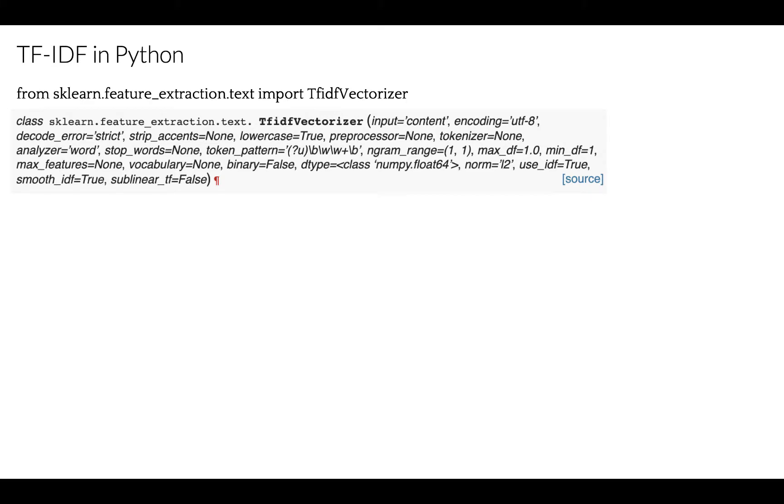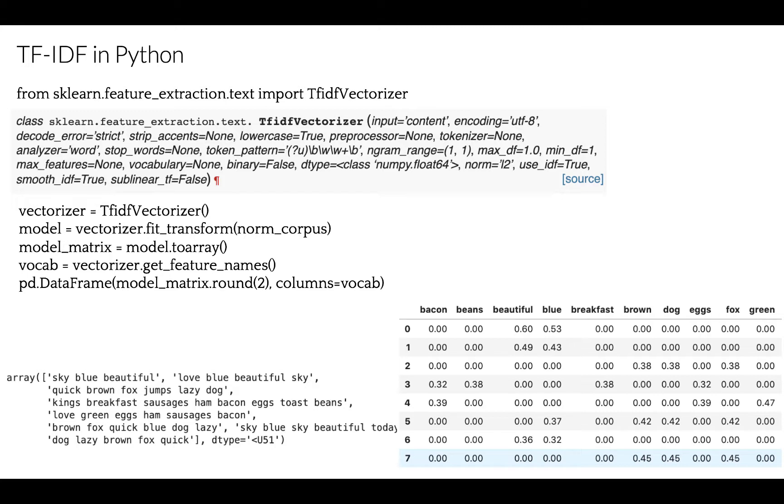First, we need to instantiate TF-IDF vectorizer. This vectorizer converts a collection of raw documents to a matrix of TF-IDF features. Let's use our normalized corpus that we created earlier, see chapter 4 for more details. We are using fit-transform method. This method learns vocabulary and IDF and returns term-document matrix. Since the matrix is sparse, let's convert it to array and print feature names. We have eight rows, eight documents, and we have 20 columns. Those are 20 unique features.